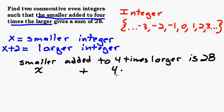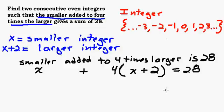Added to, that's going to be plus, four times the larger. The larger is X plus two, so we have to take four times X plus two. If I just write this I'm only taking four times X. I want to take four times the whole larger one, so I've got to put that in parentheses. Four times the whole thing X plus two, and that equals 28.